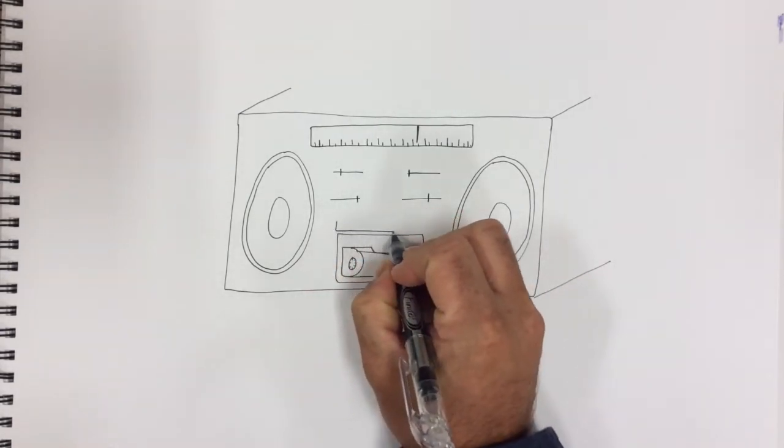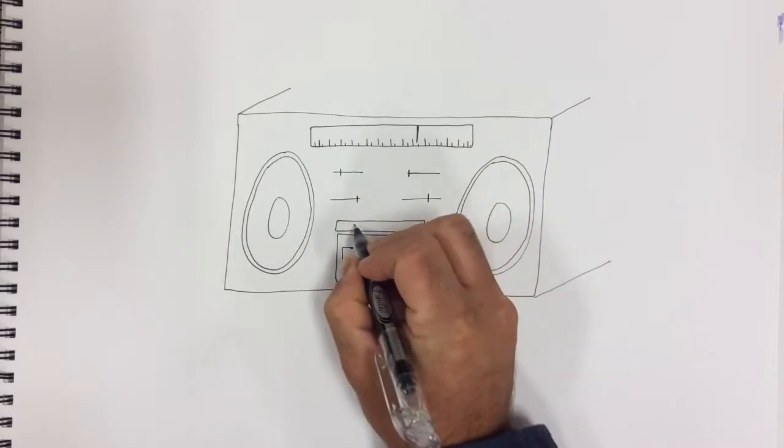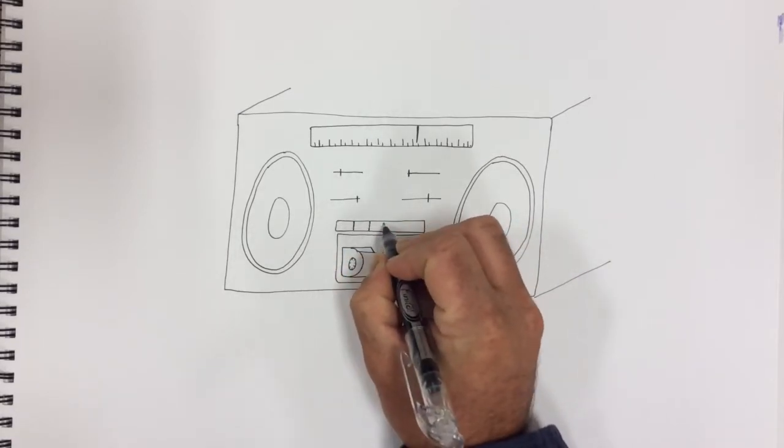Now above that tape deck, draw a long skinny rectangle. And divide it up into squares. These are gonna be the buttons for the tape control.